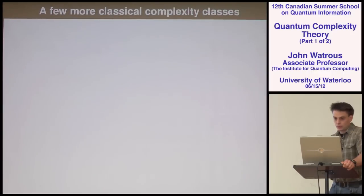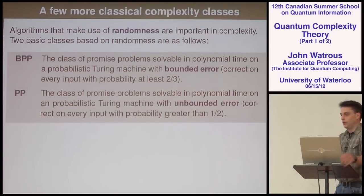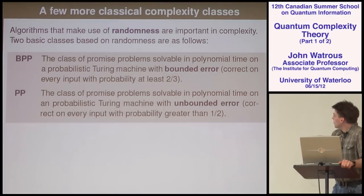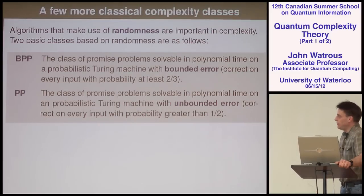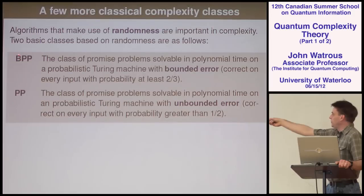Let me give a few more complexity classes — all classical for the moment. I'm trying to give a setting in which we can place quantum things and compare them with classical things. We can define complexity classes based on randomness. The first is BPP — Bounded Error Probabilistic Polynomial Time — which covers promise problems for which you have an algorithm using a random number generator that is correct with probability at least two-thirds.